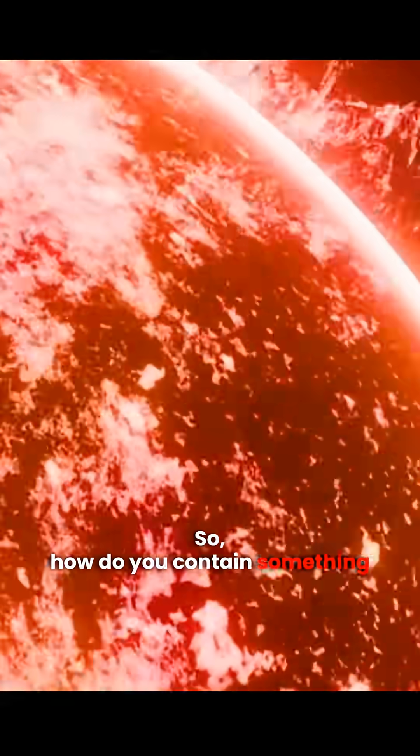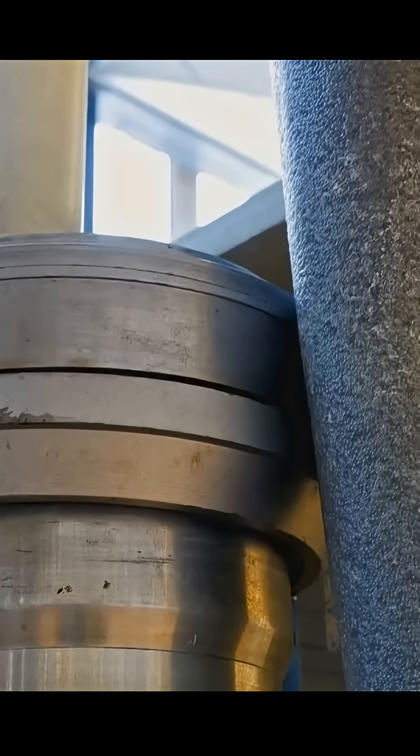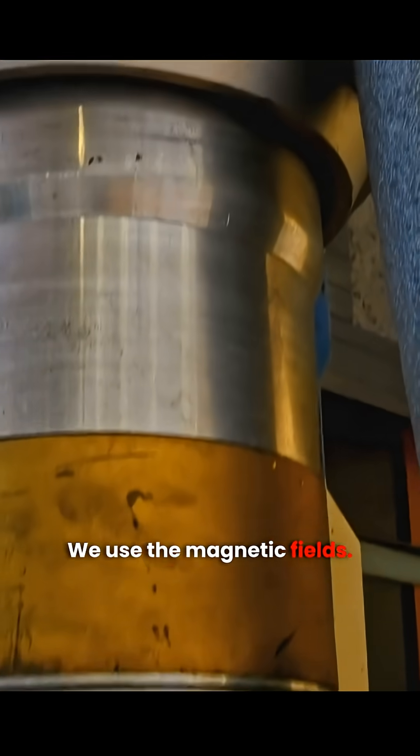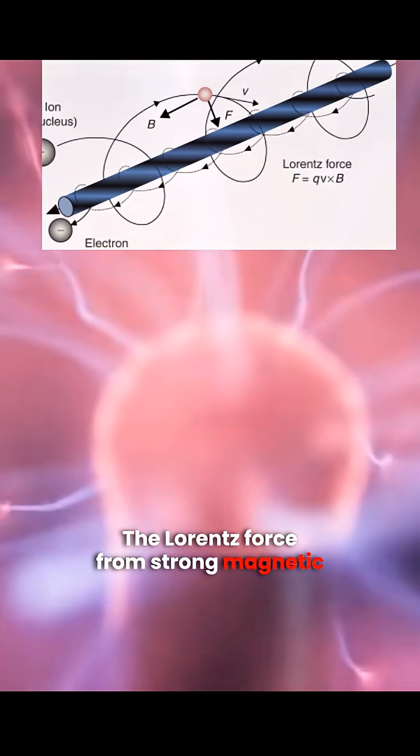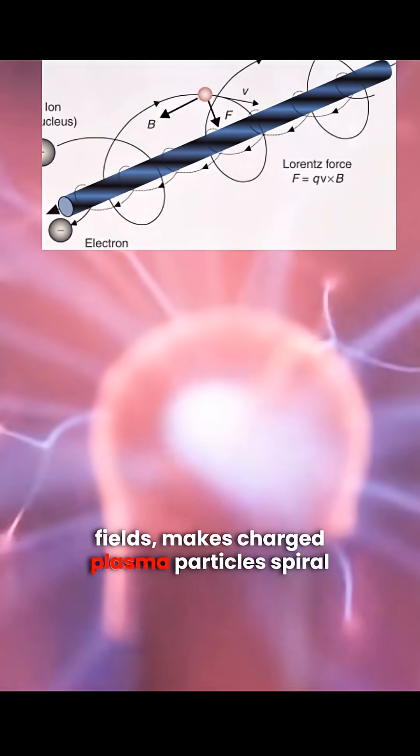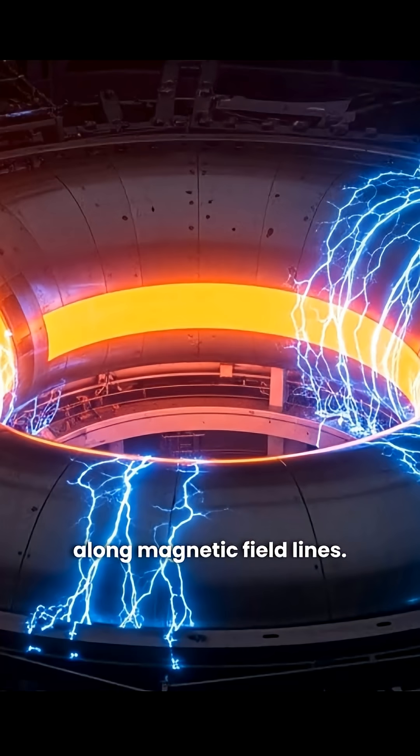So how do you contain something that melts everything it touches? We use magnetic fields. Plasma particles are charged, and charged particles obey the Lorentz force. The Lorentz force from strong magnetic fields makes charged plasma particles spiral along magnetic field lines.